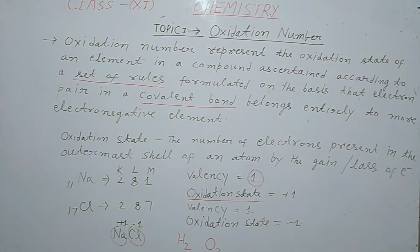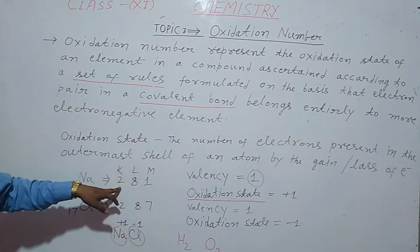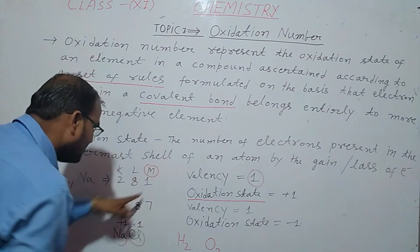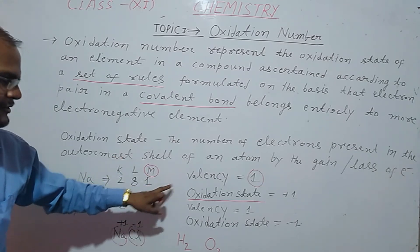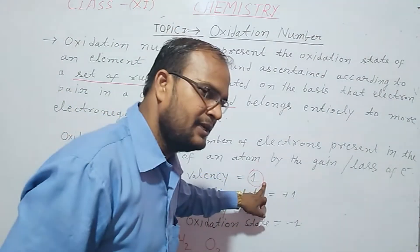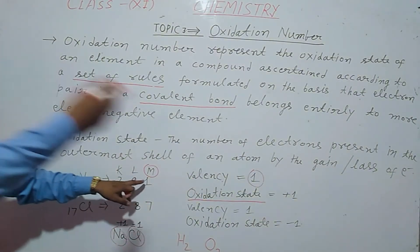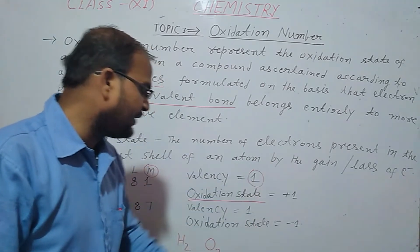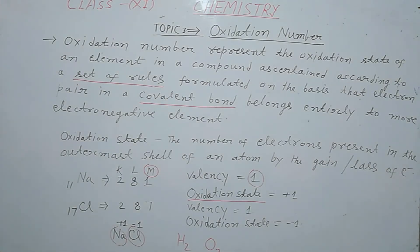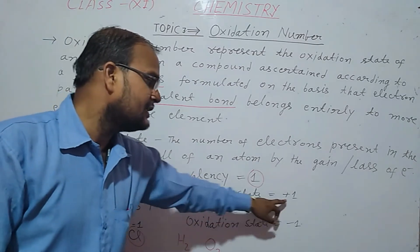Sodium atom has electron configuration with one electron in outermost shell. This electron is lost by sodium atom easily to form cation, sodium plus ion. So the valency of sodium is 1. Because its outermost electron can be easily donated to someone else, so cation form is created. But what is the oxidation state? Its oxidation state is plus.